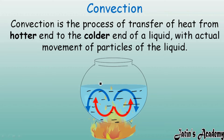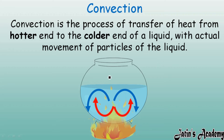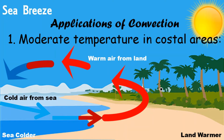So this is the process by which particles move from one place to another and transfer heat energy from the hotter end to the colder end. The definition of convection: convection is the process of transfer of heat from the hotter end to the colder end of a liquid, but with actual movement of the particles of the liquid.